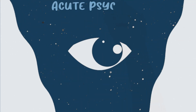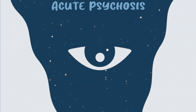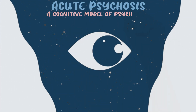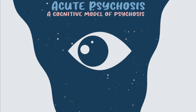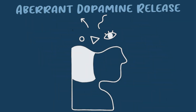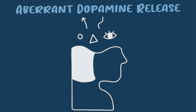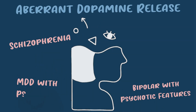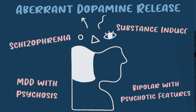The goal of this video is to give you an idea of what's occurring when someone is actively psychotic. To get a good grasp on what's going on, I need to present a cognitive model of psychosis. At the heart of active psychosis is aberrant dopamine release. The main conditions I'm thinking of are schizophrenia, bipolar with psychotic features, depression with psychotic features, and substance-induced psychotic disorders.